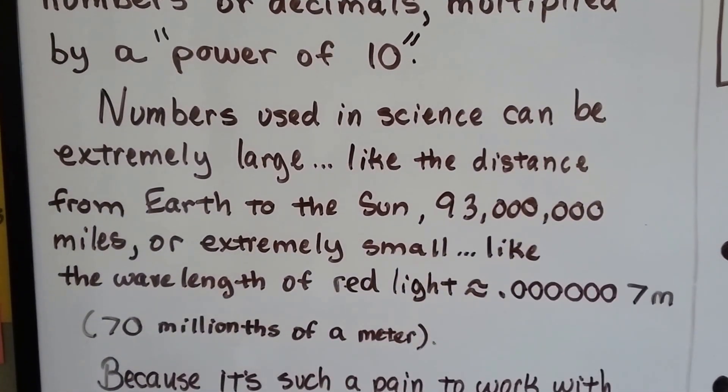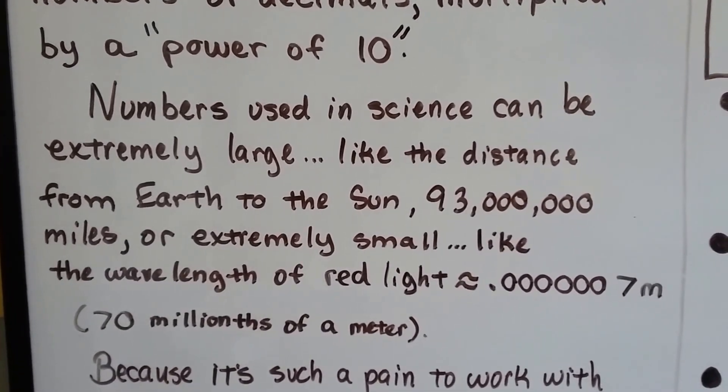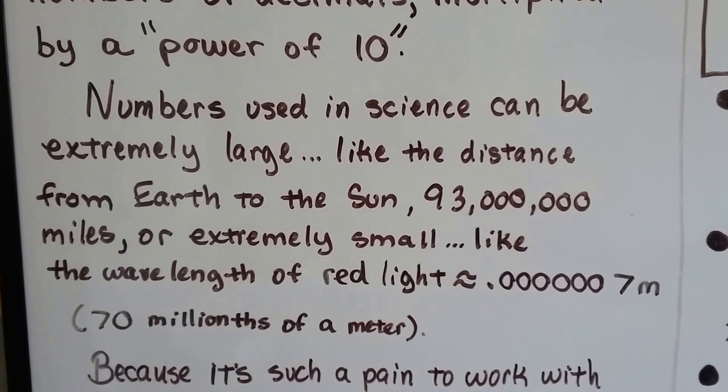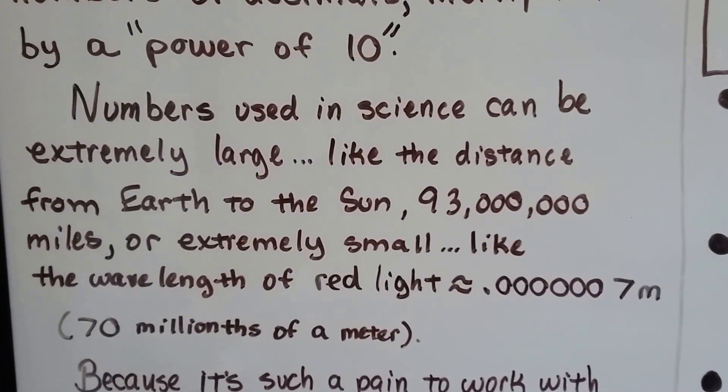Numbers used in science can be extremely large, like the distance from Earth to the Sun, that's 93 million miles, or extremely small, like the wavelength of red light, that's approximately 70 millionths of a meter.